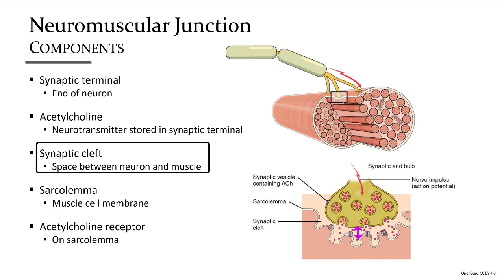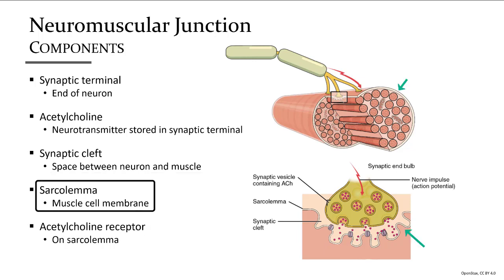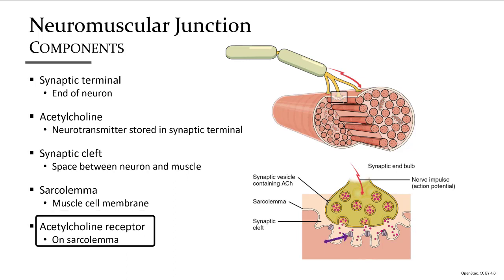There is a gap or space between the end of the neuron and the surface of the muscle. The sarcolemma is the muscle cell membrane that has receptors for acetylcholine to bind to. Once the neurotransmitter acetylcholine binds to the receptors on the sarcolemma, that is what stimulates the muscle. That stimulus must be transmitted inside the muscle to ultimately cause the release of calcium for contraction to take place.